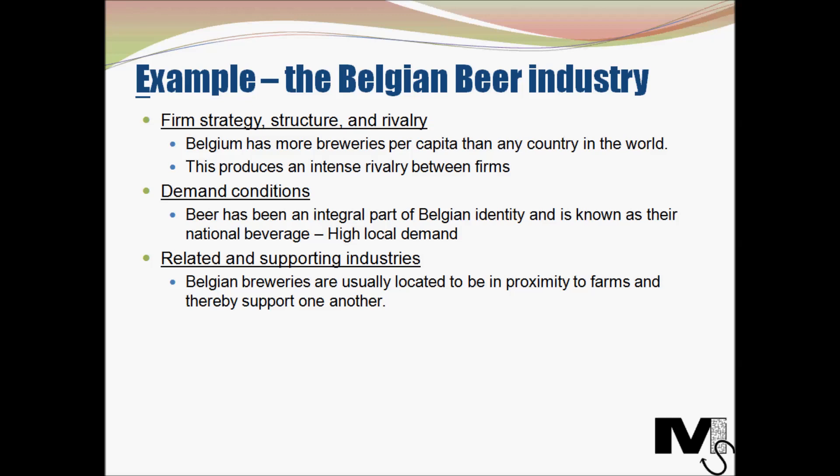Now let's look at an example — the Belgian beer industry. For firm strategy, structure and rivalry: Belgium has more breweries per capita than any country in the world, which produces intense rivalry between firms to gain a competitive advantage, creating a very competitive domestic environment.